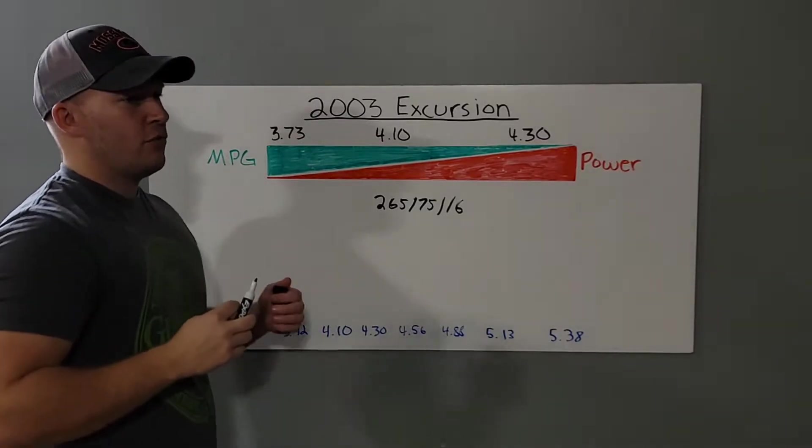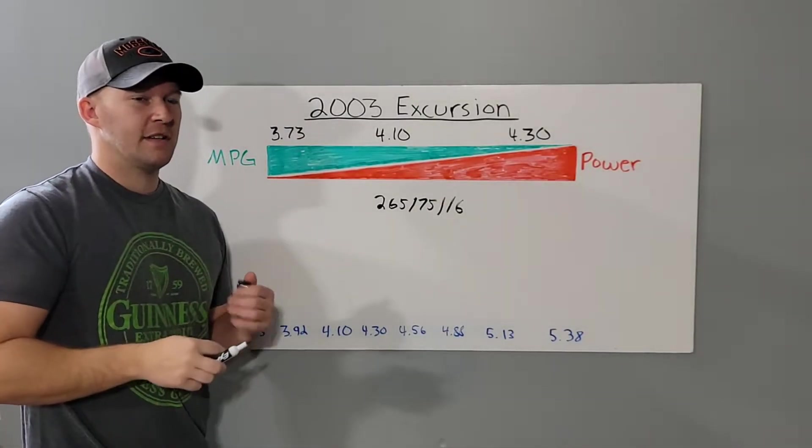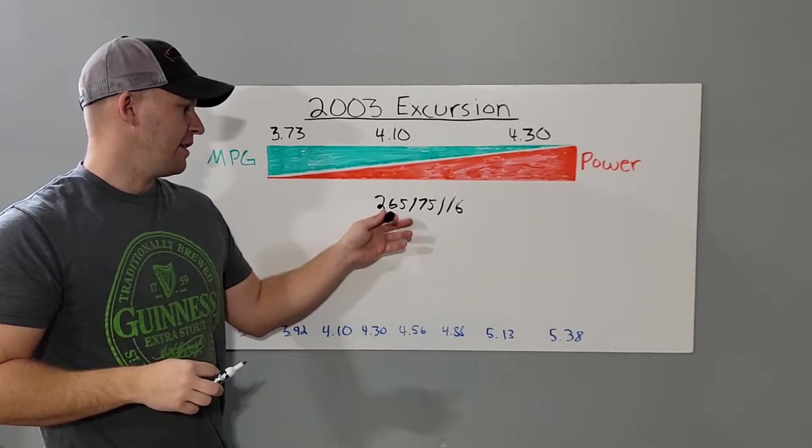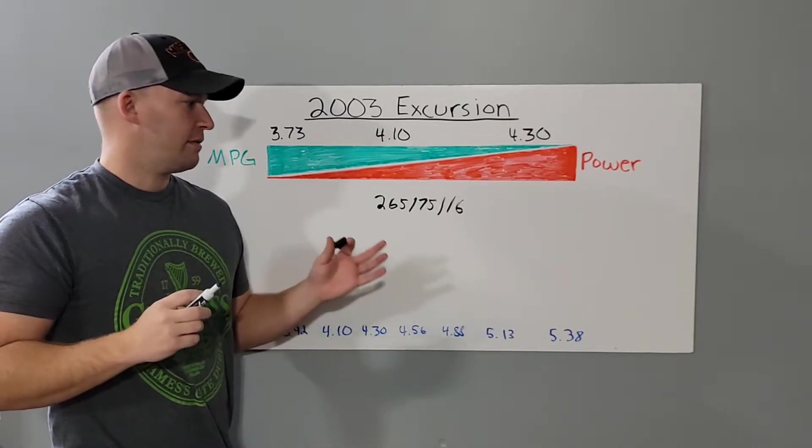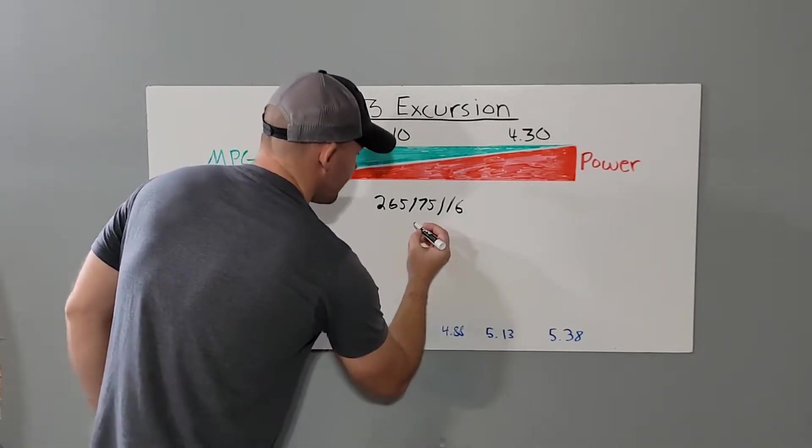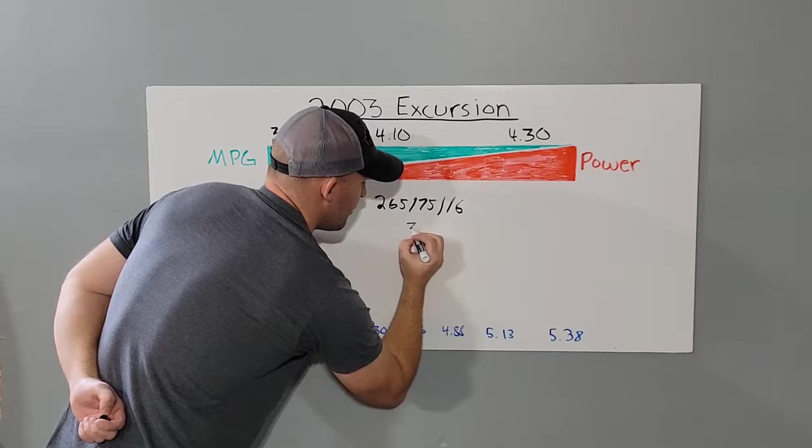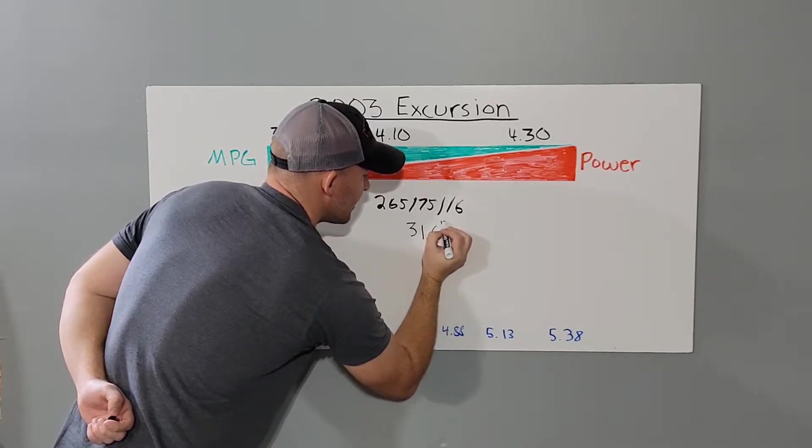If you google a tire size calculator, it will convert metric into standard for you so you can know exactly what the diameter is. This comes out to 31.6 inch tires.